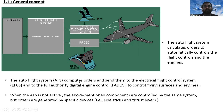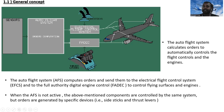Remember: the auto flight system computes orders and sends them to the electrical flight control system and also to FADEC to control flying surfaces and engines. When the auto flight system is not active, the above-mentioned components are still controlled by the same systems, but orders are generated by specific devices — for example, side sticks and thrust levers.